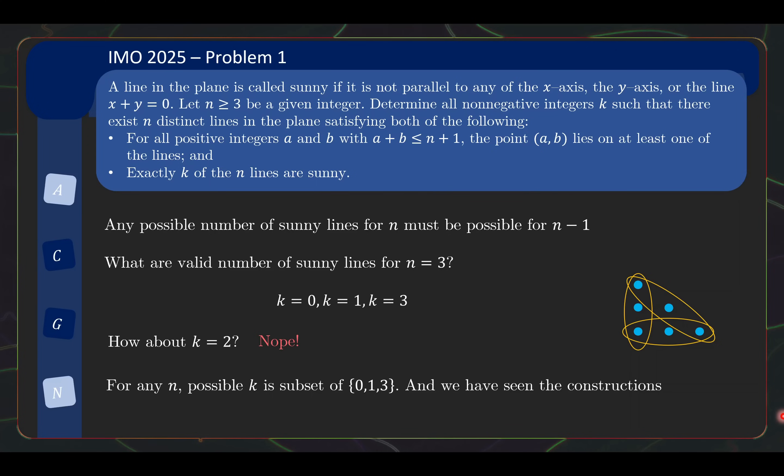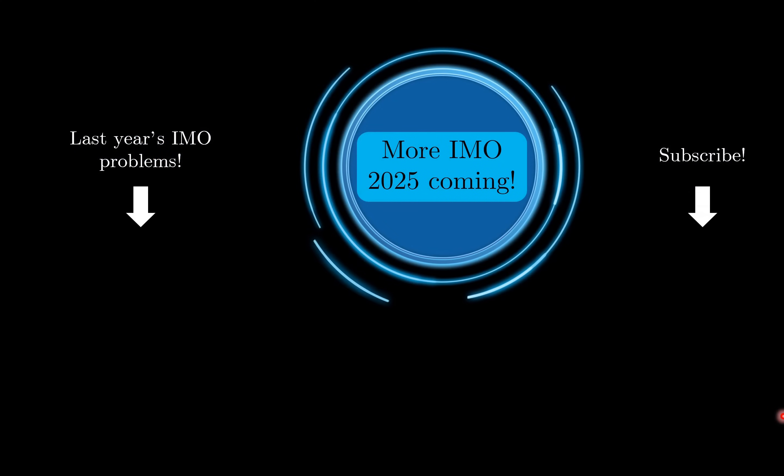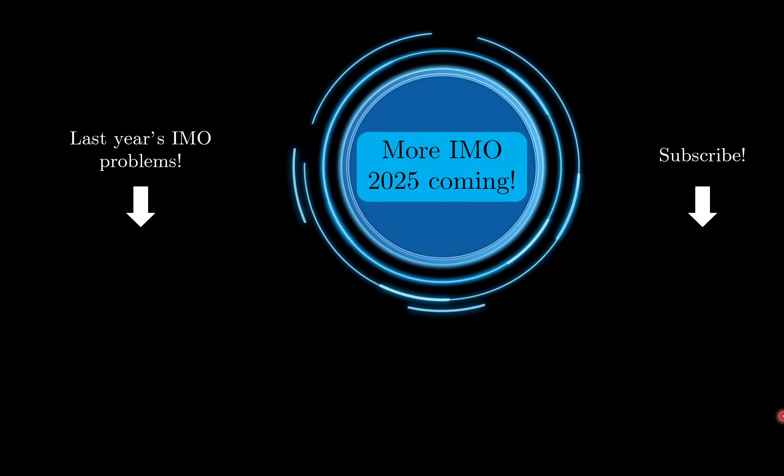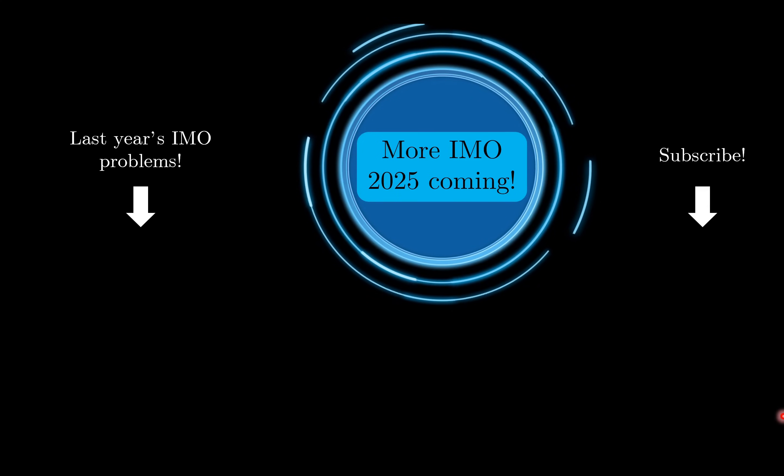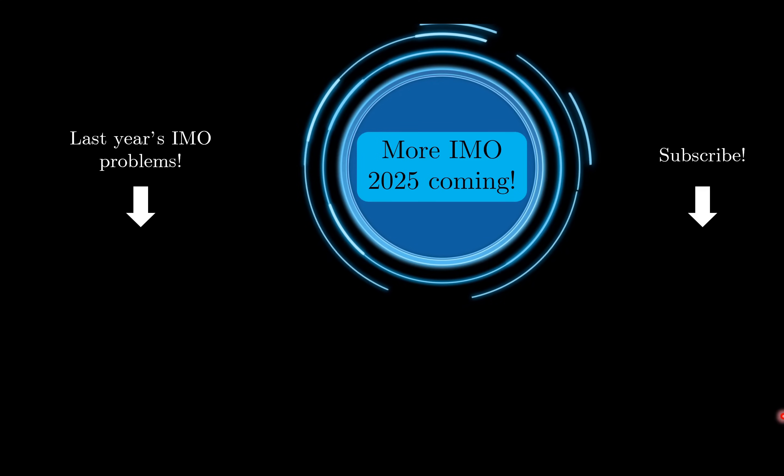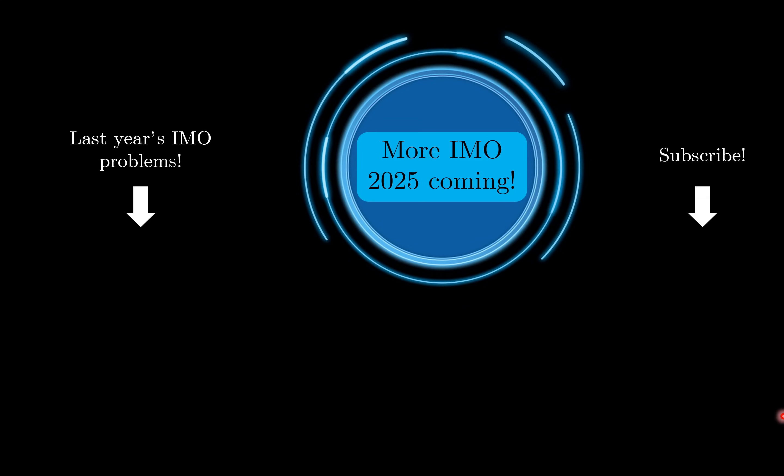Well, so this concludes problem 1. I will say that it is indeed easier than what you typically expect of a problem 2, but it is quite difficult for a typical problem 1, especially in recent years. What do you think of this year's problem 1? Do you like that it's actually a combinatorial geometry problem? Well, let me know your comments in the comment section below and stay tuned for the remaining IMO 2025 problems.